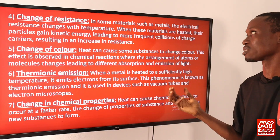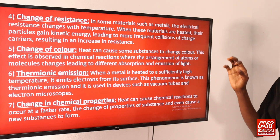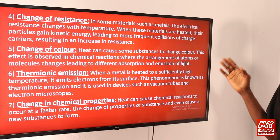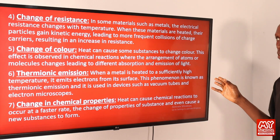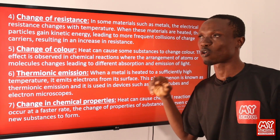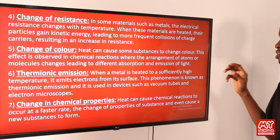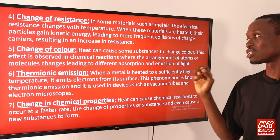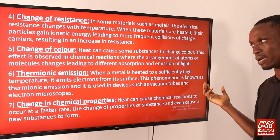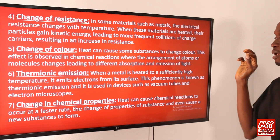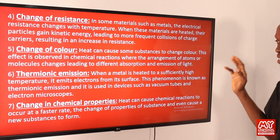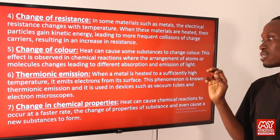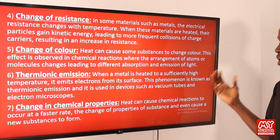The fourth effect is change of resistance. In some materials such as metals, the electrical resistance changes with temperature. When these materials are heated, their particles gain kinetic energy, leading to more frequent collisions of charge carriers and an increase in resistance. The fifth effect is change of color. Heat can cause some substances to change color, an effect observed in chemical reactions where the arrangement of atoms or molecules changes, leading to different absorption and emission of light.